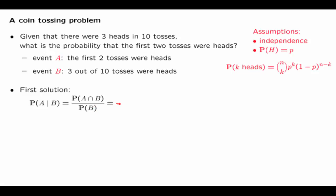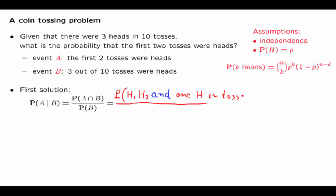Now let us specialize to the particular example that we're trying to solve. In the numerator, we're talking about the probability that event A and event B both happen. This means that event A happens — that is, the first two tosses resulted in heads — but in addition to that, event B happens. Event B requires that there is a total of three heads, which means that we had one more head in the remaining tosses: one head in tosses 3 all the way to 10.